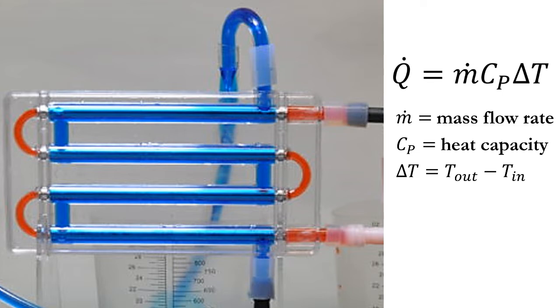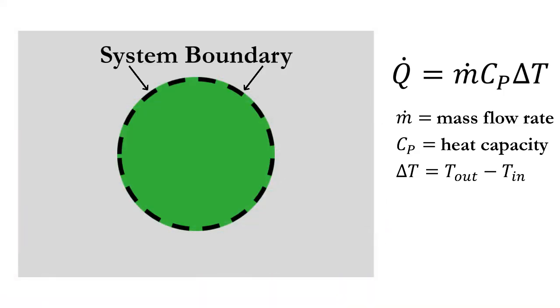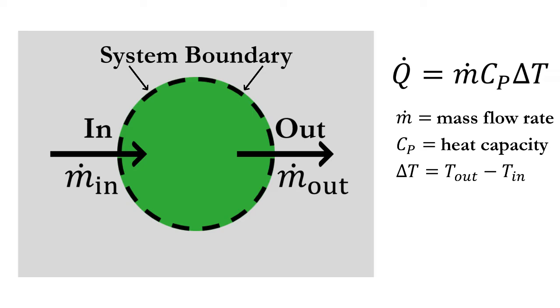This can help us decide what to define as our system and where to draw our boundary. The first requirement is that we choose a system that is open, or has mass transferred across the boundary. This is essential because our heat duty equation assumes that we have fluid flow.